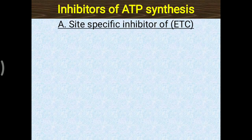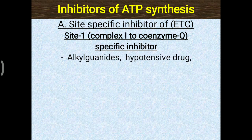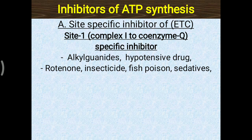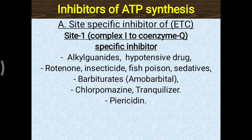In detail, site 1 — from complex 1 to coenzyme Q — is inhibited by alkyl guanidines (a hypotensive drug), rotenone (an insecticide and fish poison), barbiturates such as amobarbital (a sedative), chlorpromazine (a tranquilizer), and piericidin. Of these, rotenone, alkyl guanidines, barbiturates, and chlorpromazine are frequently asked in MCQs.